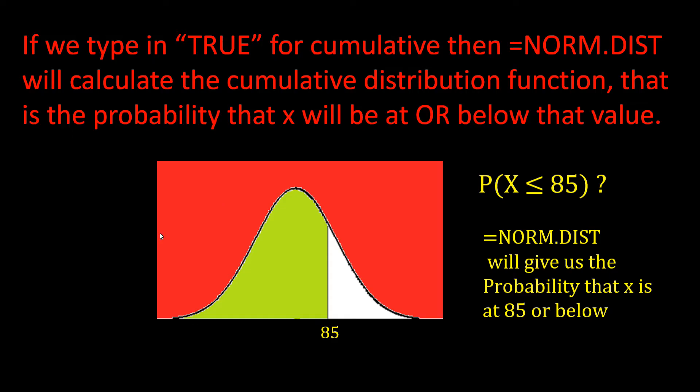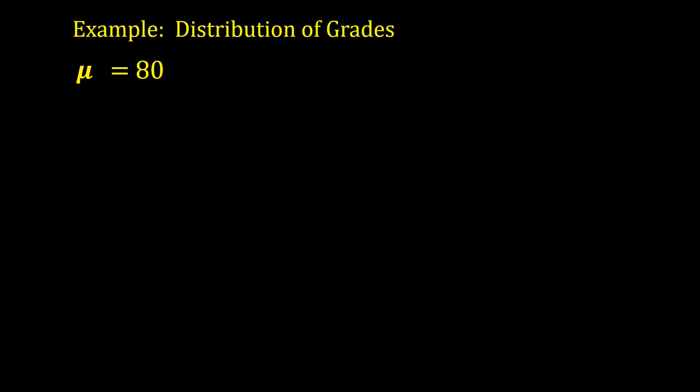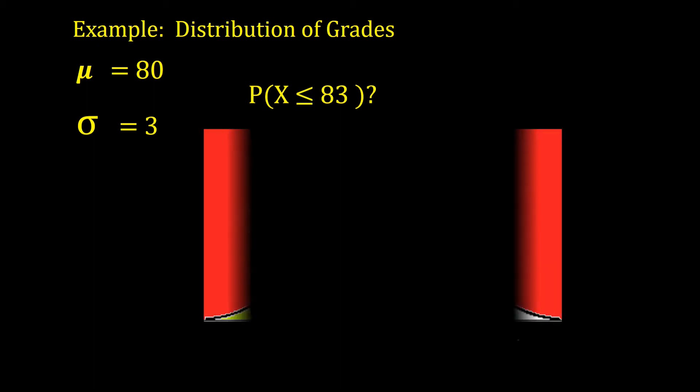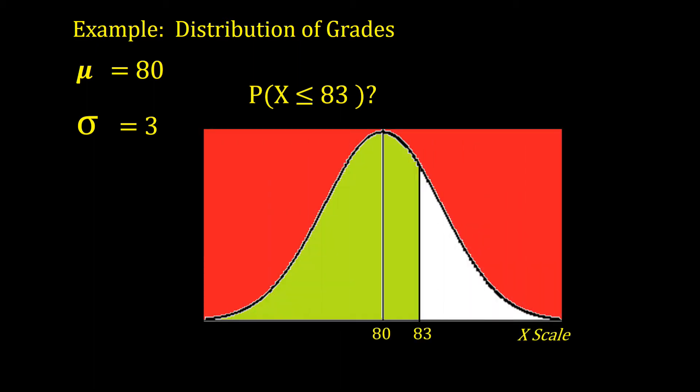Let's take a look at an example. Suppose we have a class exam where the average grade was 80, so μ is 80. Now suppose the class standard deviation is 3 points. What is the probability that a student got an 83 or below? Graphically, it would look like this. We would like to find the green cumulative shaded area at or below 83.